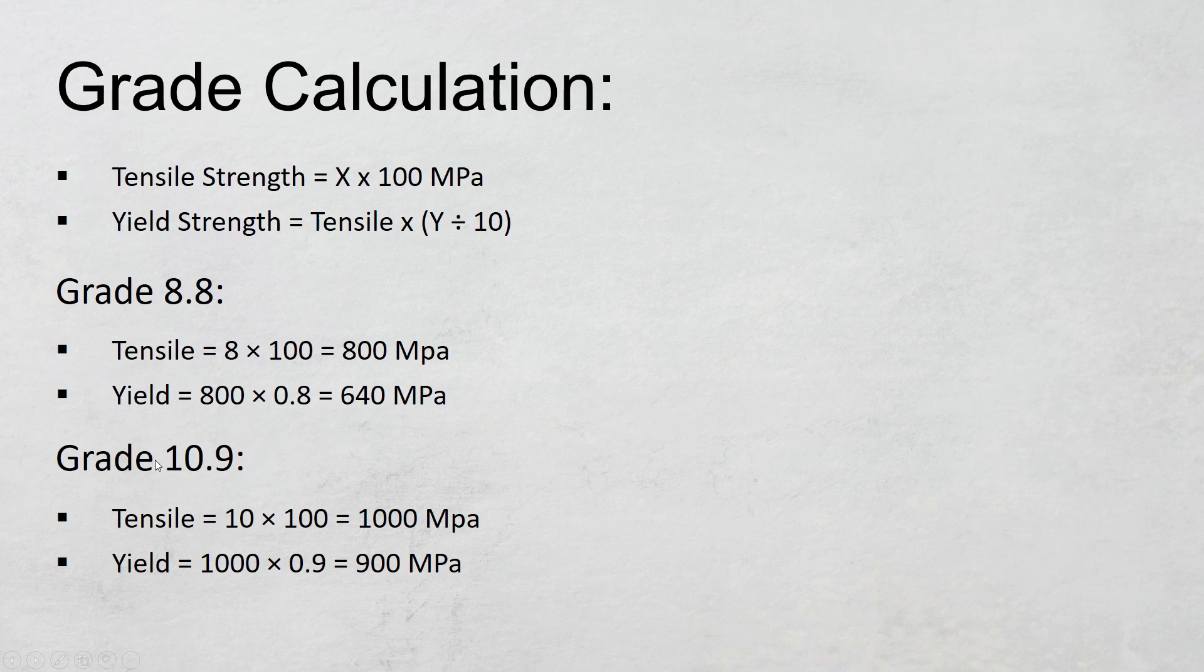Let's take another example. Let's say I have a bolt here and the grade is defined as 10.9. So the first number X is 10. I will multiply this 10 by 100, so I will get 1000. So the tensile strength of this 10.9 grade bolt is 1000 MPa.